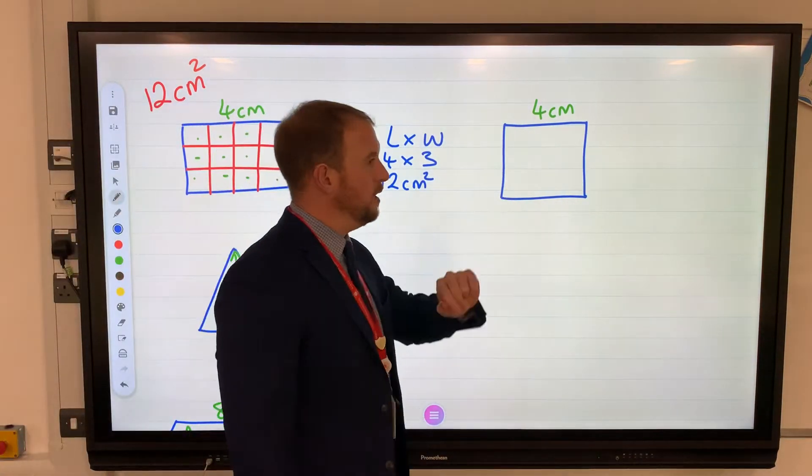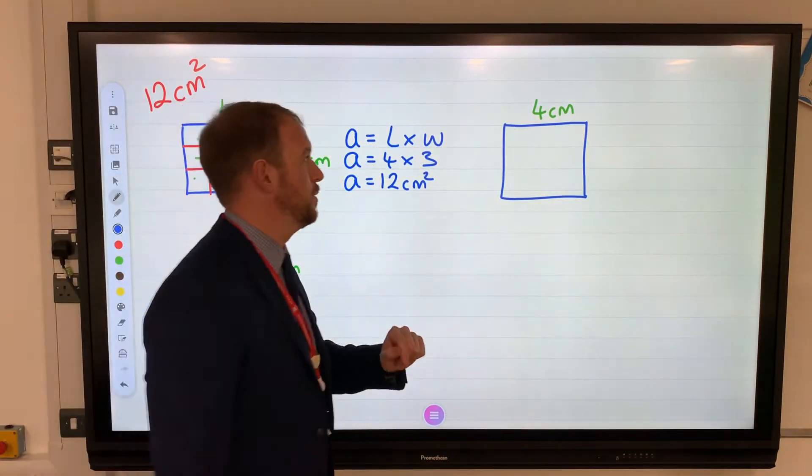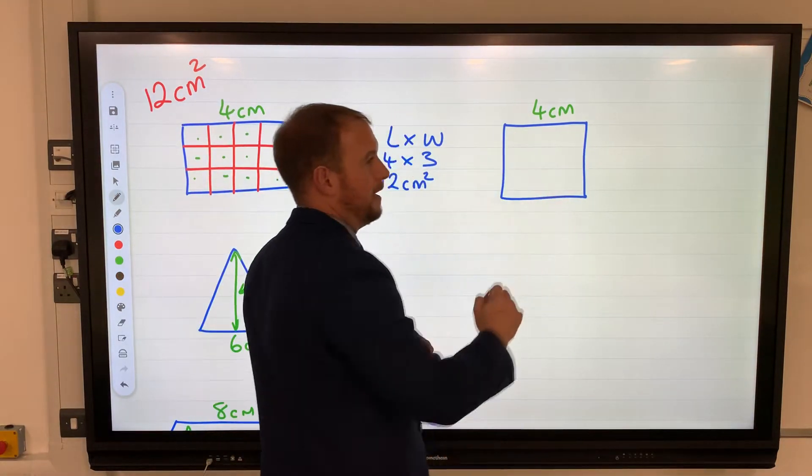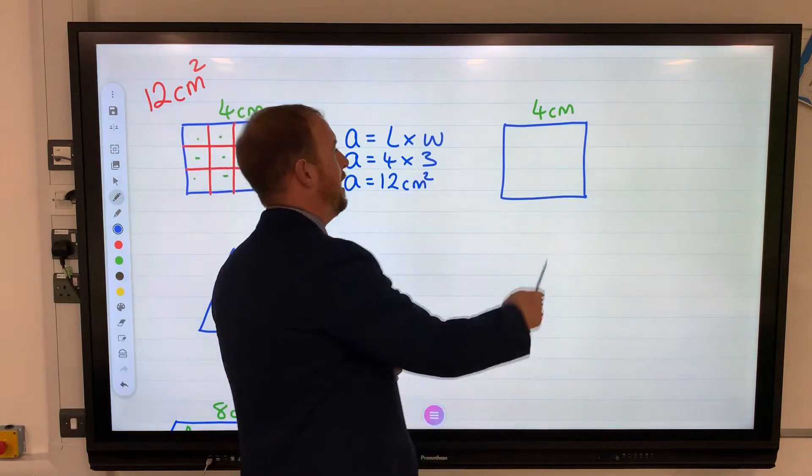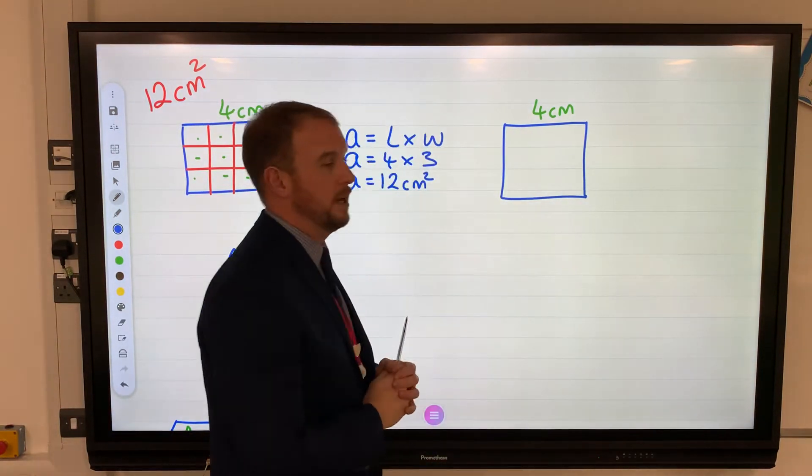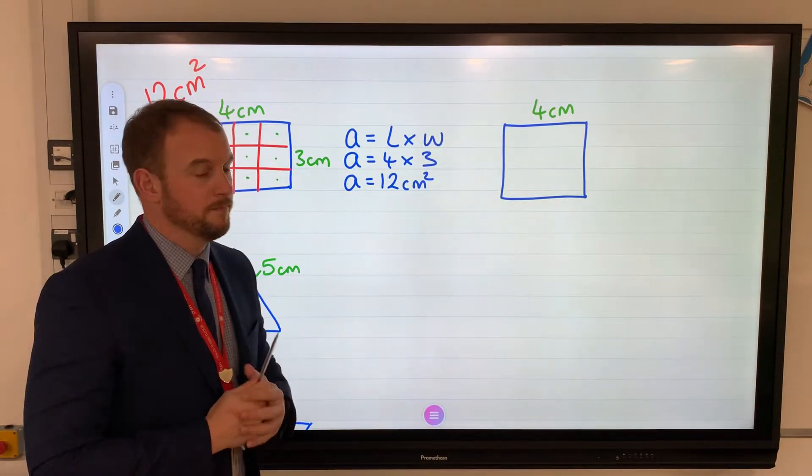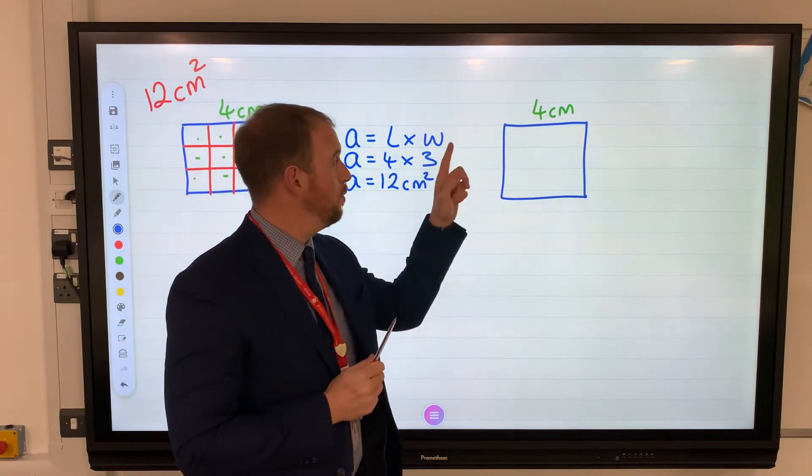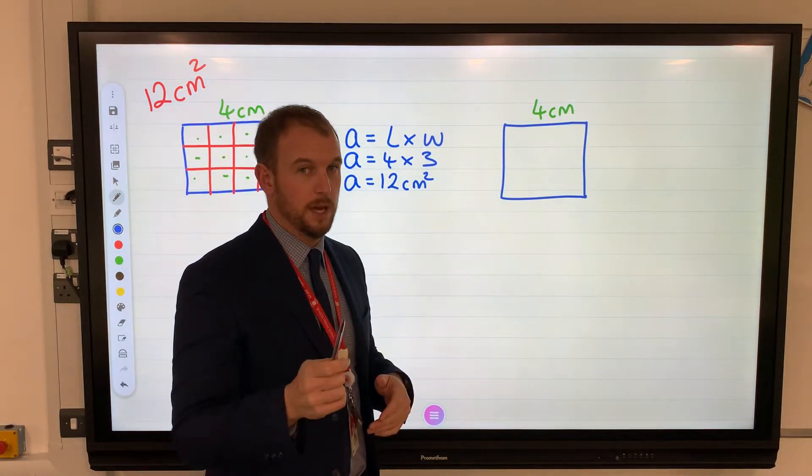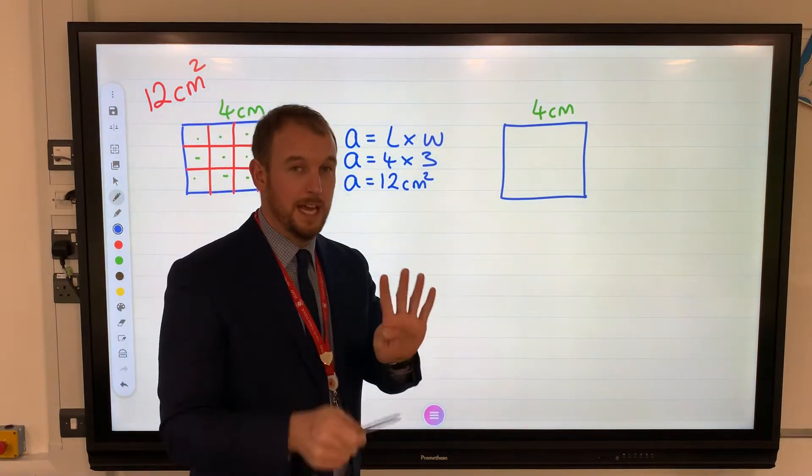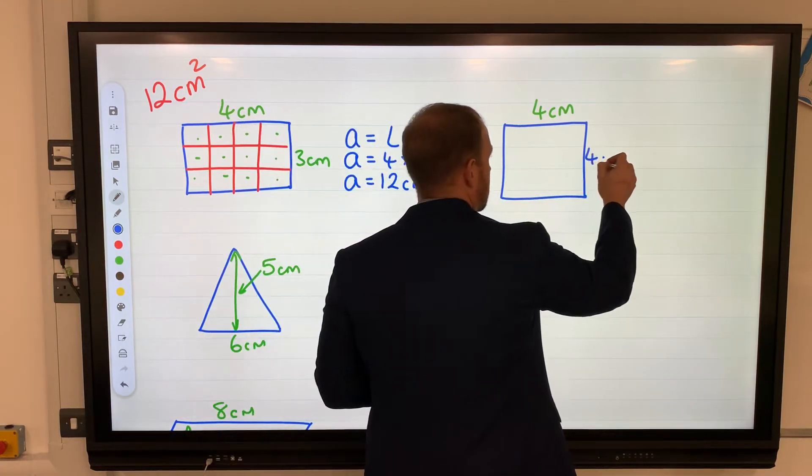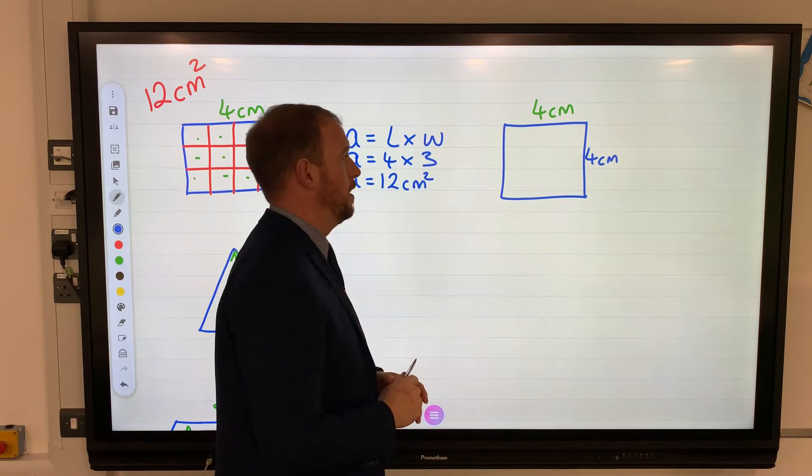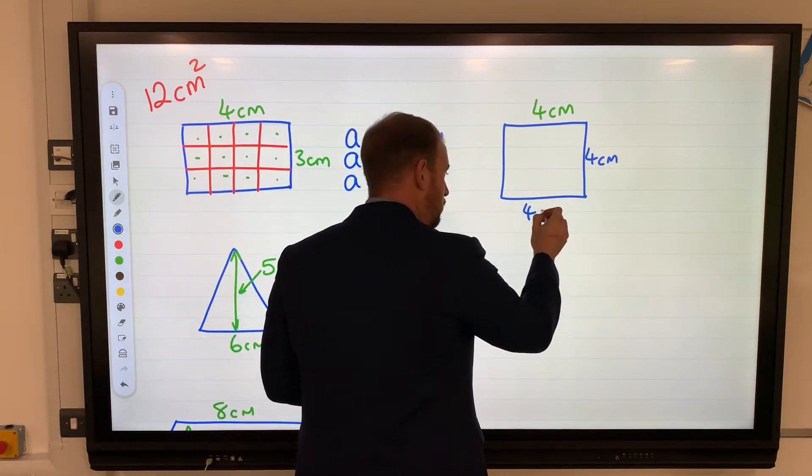A square - I could draw the lines again and count them, however we can use a formula. I haven't labeled all four sides, and when you get given this question they won't be labeled either. Only one will be labeled because a square has four equal sides. So if this is four, then this one must be four as well, even if they write it like this.